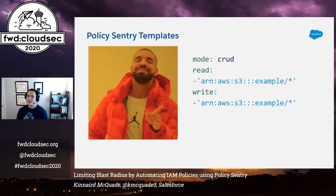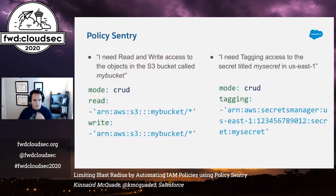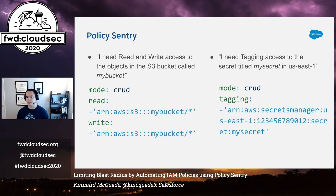Policy Sentry is an open source command line tool that creates least privileged IAM policies in seconds. It scopes those policies down to access levels and resource ARNs in a simple YAML format. This is what a Policy Sentry template looks like — notice how it's really easy to get the TLDR on what a policy means. You don't have to read the policy side by side with AWS documentation. It tells you literally which resource ID you need access to and the access level. The access levels can be read, write, list, permissions management, and tagging. One of the best things about Policy Sentry is you don't need to be an IAM expert to use it.